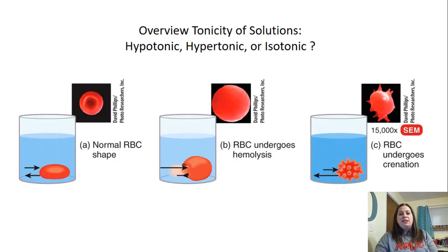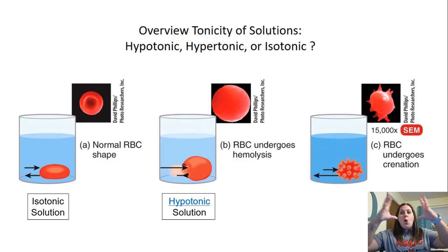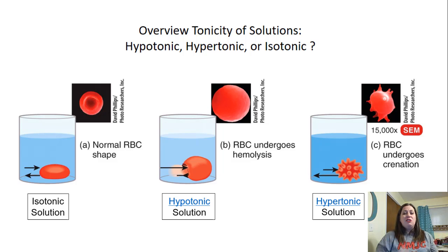Here's an overview of tonicities. A normal red blood cell in an isotonic solution moves equally. In a hypotonic solution, water enters the cell, causing hemolysis — the cell gets big and bursts. In a hypertonic solution, the cell crenates and shrinks up. Depending on the type of solution the cell is placed in, it will either not change in isotonic, expand in hypotonic, or shrivel in hypertonic.